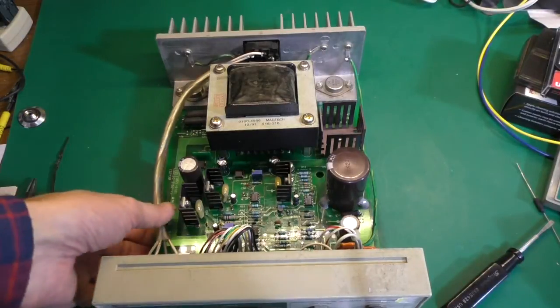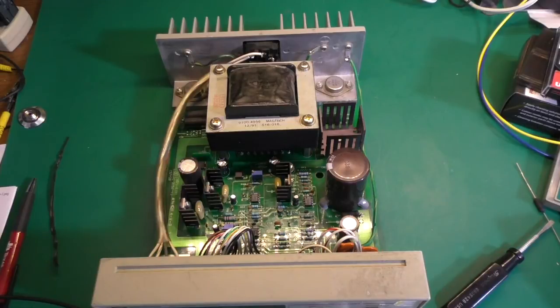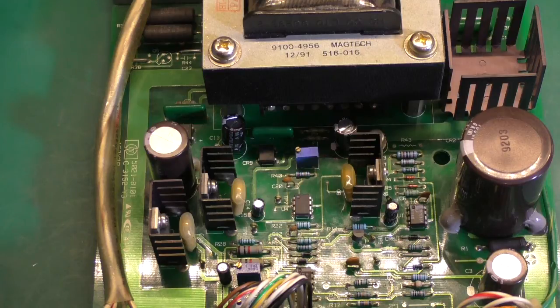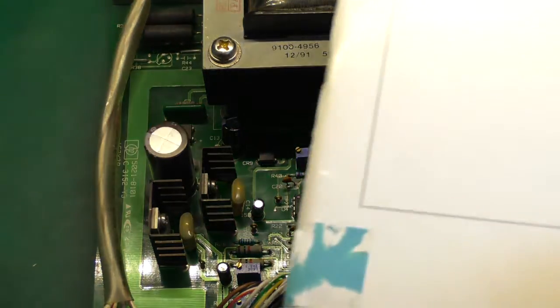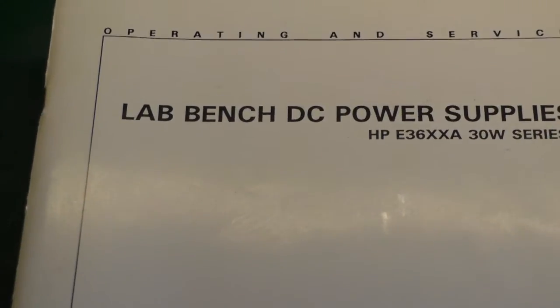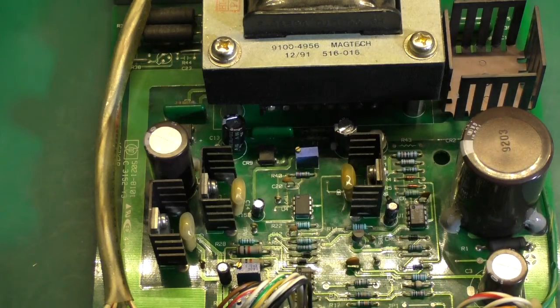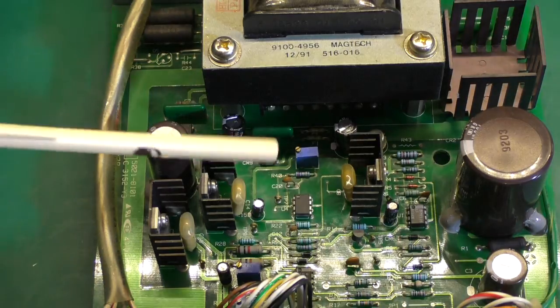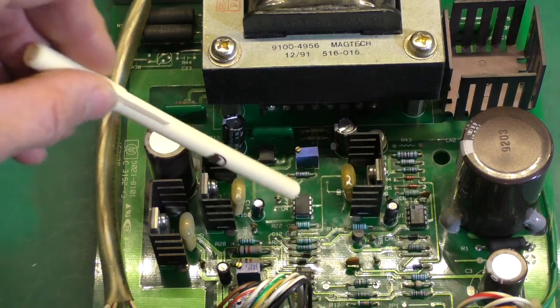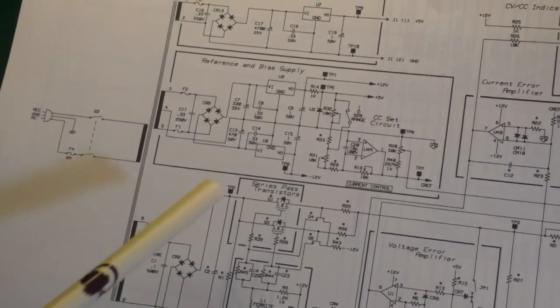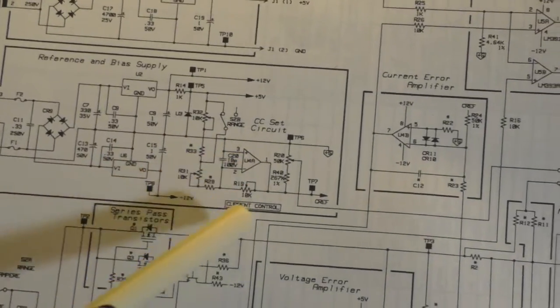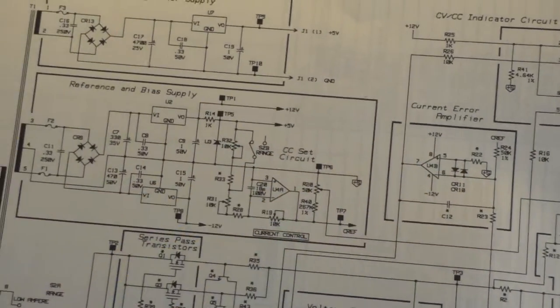But all I need to do now is just order up the repair manual and schematic, and hopefully I will be in business. Back again, it's probably been about 10 days since last time I had the camera on this. Ordered the manual for this power supply here, so I've got the schematic and everything ready. And it looks like I think it's probably this chip there. I think the problem is this U4, which actually adjusts the current.